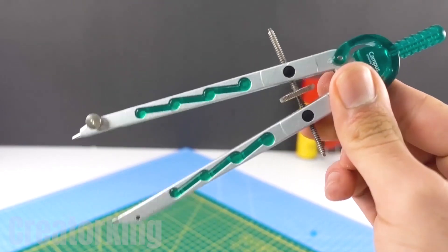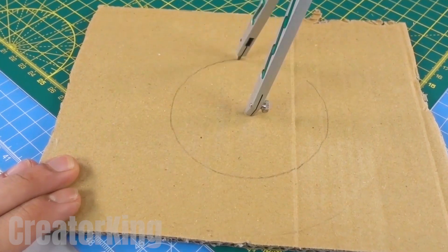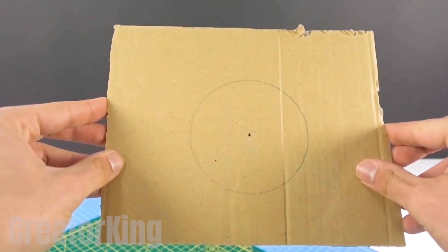Hi King Creator fans! Have you seen my nice compass? With it, we will trace a circle on a recycled piece of cardboard.